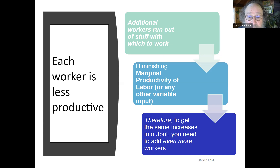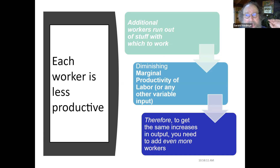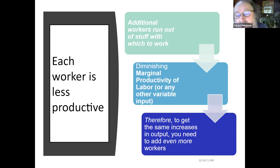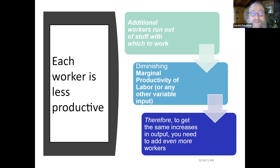Each worker starts being less productive. Additional workers run out of stuff with which to work — diminishing marginal productivity of labor. To get the same increase in output, you need to add even more workers. The first ounce you were able to get by hiring one worker, paying for one worker. By the time you're further along, to get one more ounce you may need five workers — and that's going to be five times as expensive. Diminishing marginal productivity means increasing marginal cost.